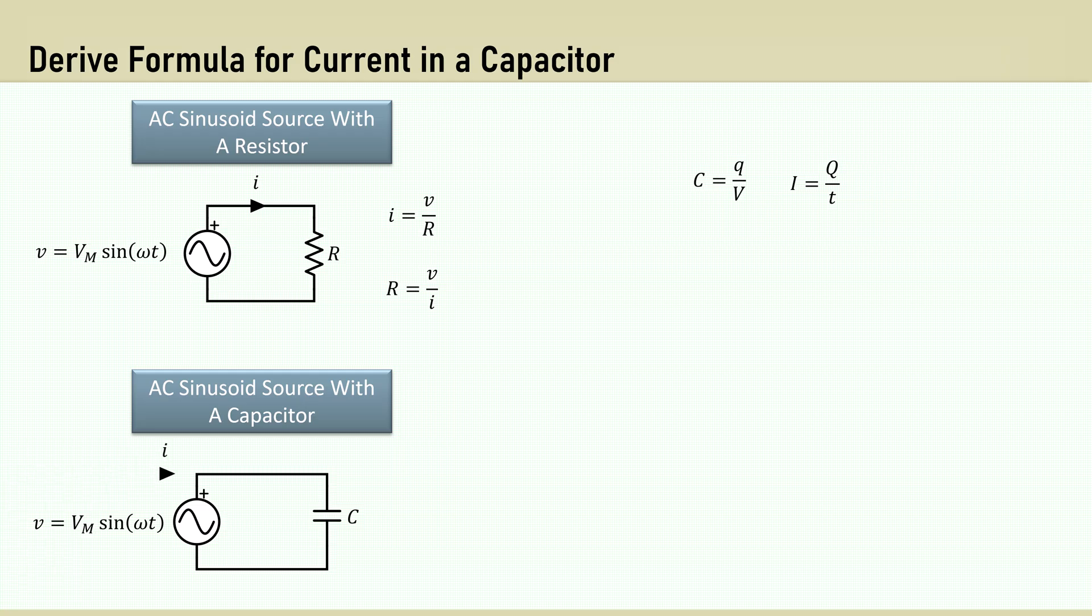Now consider a capacitor across an AC sinusoidal voltage source. The current I is the voltage over the capacitive reactance X sub C. Therefore, the reactance is V over I. In the next few minutes, we will be doing an analysis to derive the reactance formulas, and we'll do so by rearranging the equations to be the reactance, which will be in the form of V over I.